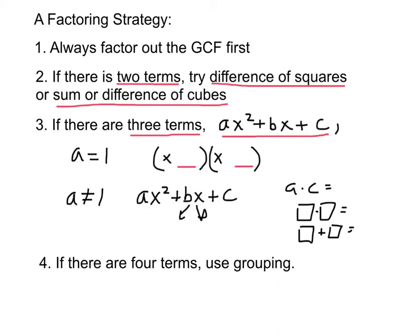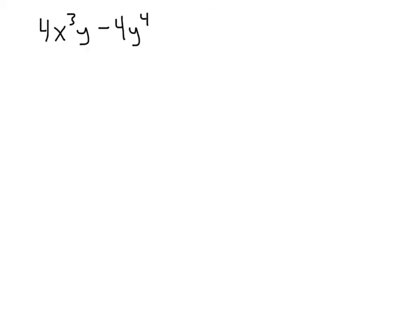If there are four terms in your original problem, use grouping — group the first two together and the last two together, then work from there. To summarize the general strategy: always factor out the GCF first. Then, for two terms, try difference of squares or sum/difference of cubes; for three terms, use the appropriate trinomial method depending on whether a equals 1; for four terms, use grouping.